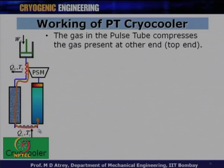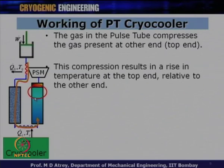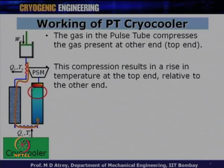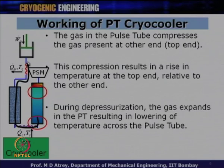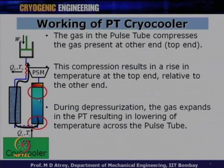Let us call this the top end and the other the bottom end of the pulse tube. The compression of gas already present by the incoming gas during pressurization results in a temperature rise at the top end — in fact, temperature rises at every point, but most at the top. During depressurization, the piston goes back and the gas in the pulse tube expands, resulting in lowering of temperature across the pulse tube.